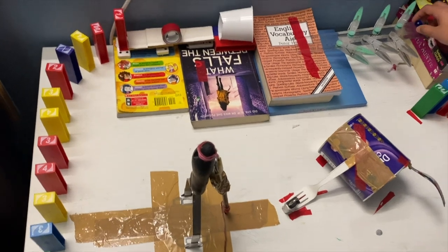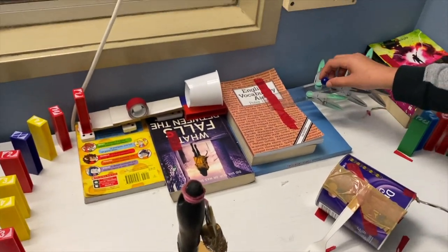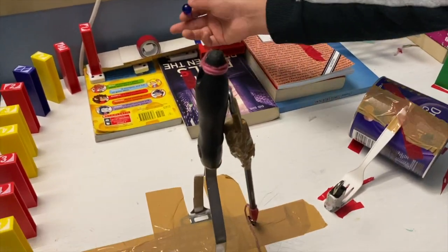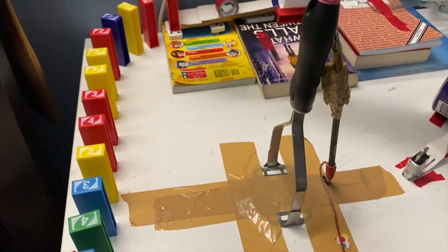The marble will roll down the ruler, hitting the pegs, changing direction, going through the cup, hitting the roll of tape, toppling over the dominoes.